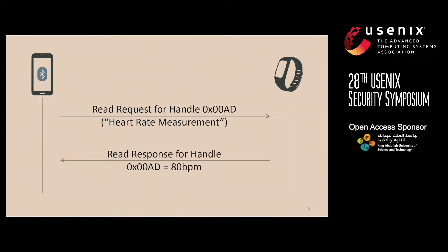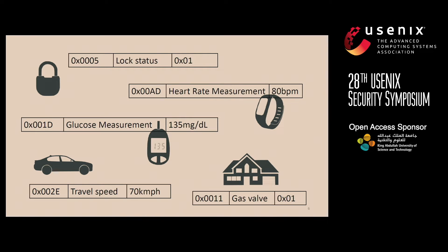Accessing a characteristic value is fairly straightforward — you send a request and you get a response. There are other access mechanisms, but I'll only be focusing on request-response. While it could be a fairly straightforward process, there are occasions where we might not want it to be quite this straightforward, because the characteristic value holds data that is either sensitive or critical.